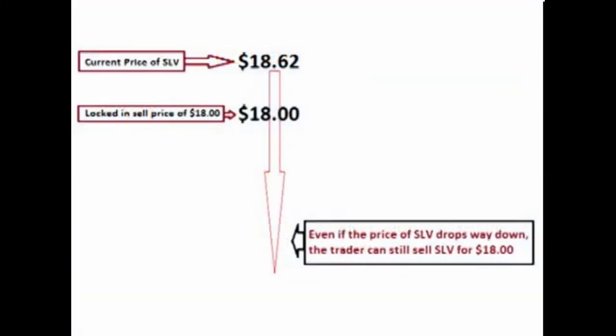This means that at any time between the time the option is purchased and the time the option contract expires, the trader has the option of selling his 100 shares of SLV for $18, no matter what the price of SLV is at that time. Even if the price of SLV drops to $6 per share, the trader can still sell it for $18 per share anytime he wants up until the time that the option contract expires. When used this way, a put option acts like an insurance policy against loss.